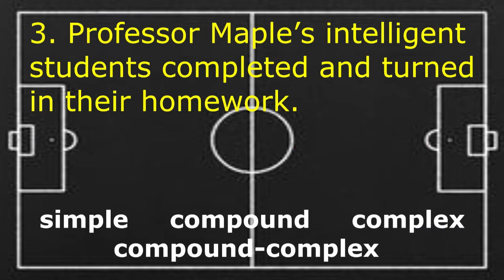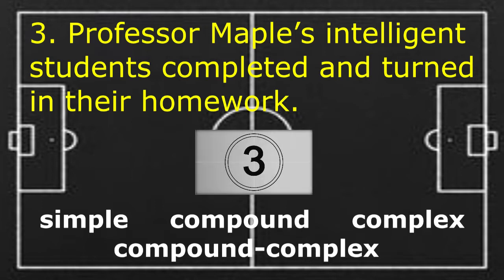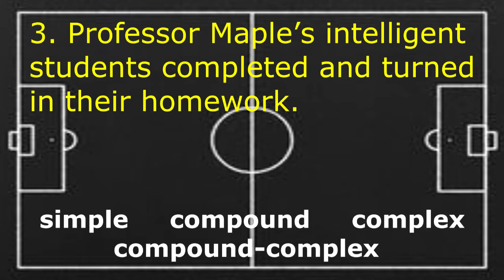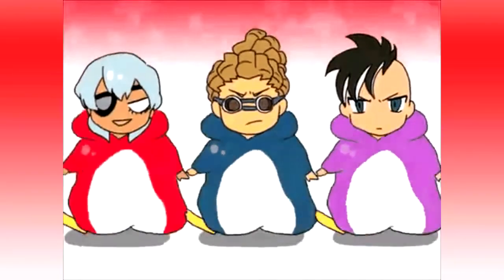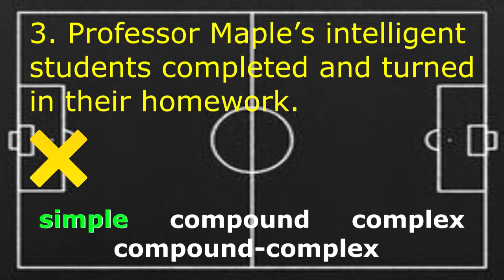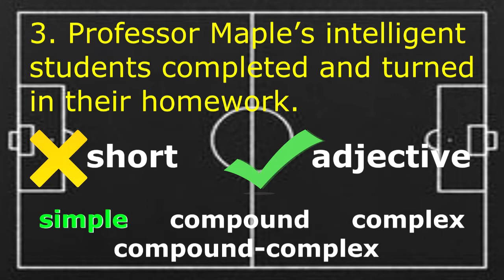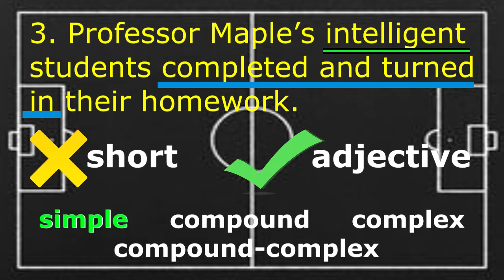Number 3: 'Professor Maple's intelligent students complete and turn in their homework.' If your answer is simple, then you are correct. A simple sentence does not necessarily have to be short. It can have adjectives. In this case there are two verbs — 'complete' and 'turn in' — however, the sentence expresses one complete thought and therefore it is a simple sentence.